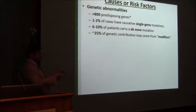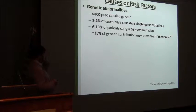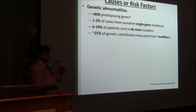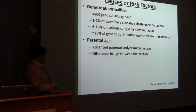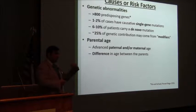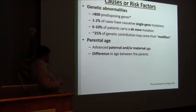What are the genetic risk factors emerging from autism research? Well, there are over 800 predisposing genes, but only one to two percent of cases have a single-gene mutation as the cause. So the idea is that there might be some component of modifier genes. And there are other factors hinting at a genetic component, such as parental age — there might be factors in the germlines that affect the prevalence of autism.